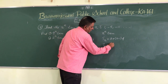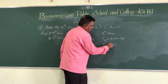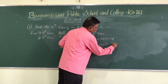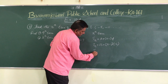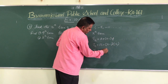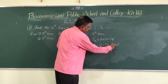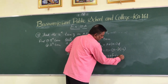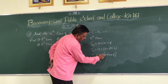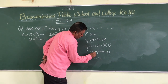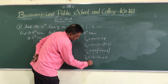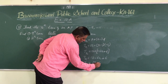Substituting: A is 13, n is written as is, so Tn = 13 + (n - 1) × (-6). Expanding: 13 + (-6n) + 6. Therefore the nth term Tn is equal to 19 minus 6n.